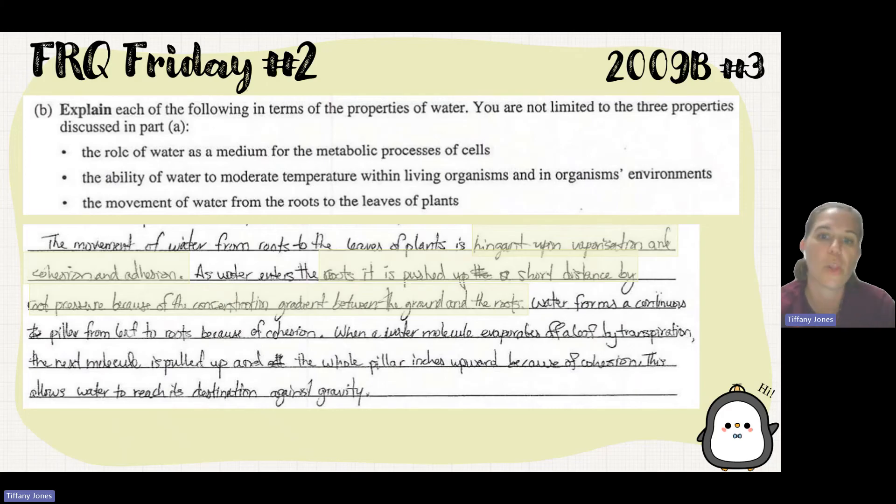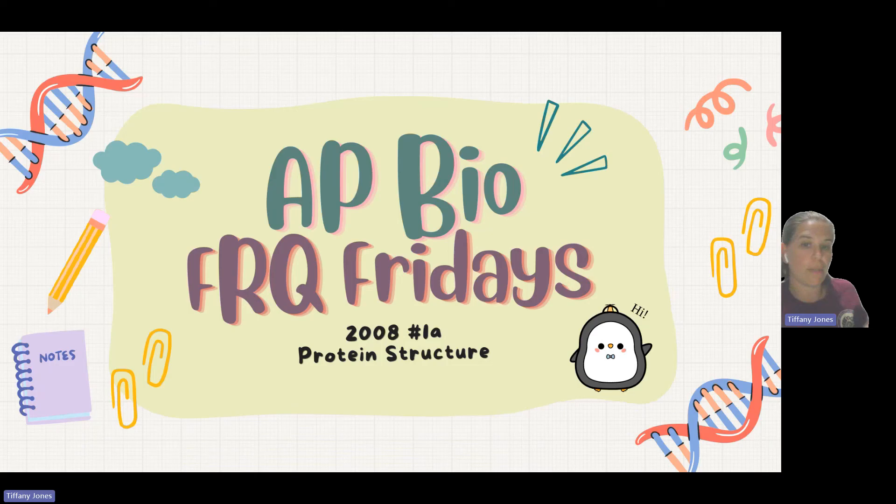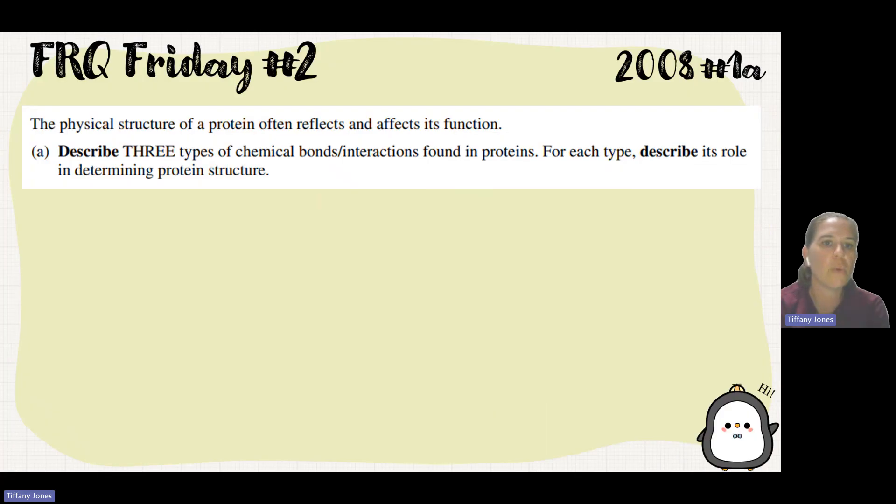Root pressure is high in the soil which pushes it up, plus the negative pressure potential from transpiration. The student talked about how it's hinged upon vaporization, cohesion and adhesion. Water is pushed up a short distance in the root forming a continuous pillar from leaf to root. Because of cohesion, when water evaporates off through transpiration, the whole pillar is pulled upward, allowing water to reach its destination.